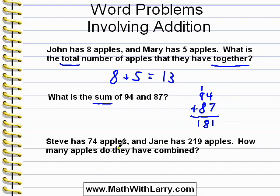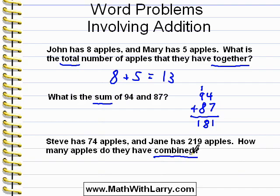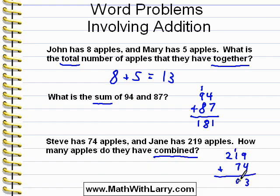Let's take a look at this problem. Steve has 74 apples, and Jane has 219 apples. How many apples do they have combined? Again, we have to look for keywords. Combining almost always means that we're going to have to add to get our answer. And that's the only keyword that we have, so we know that we have to add. We'll add 219 plus 74, and we get 293 as our answer.